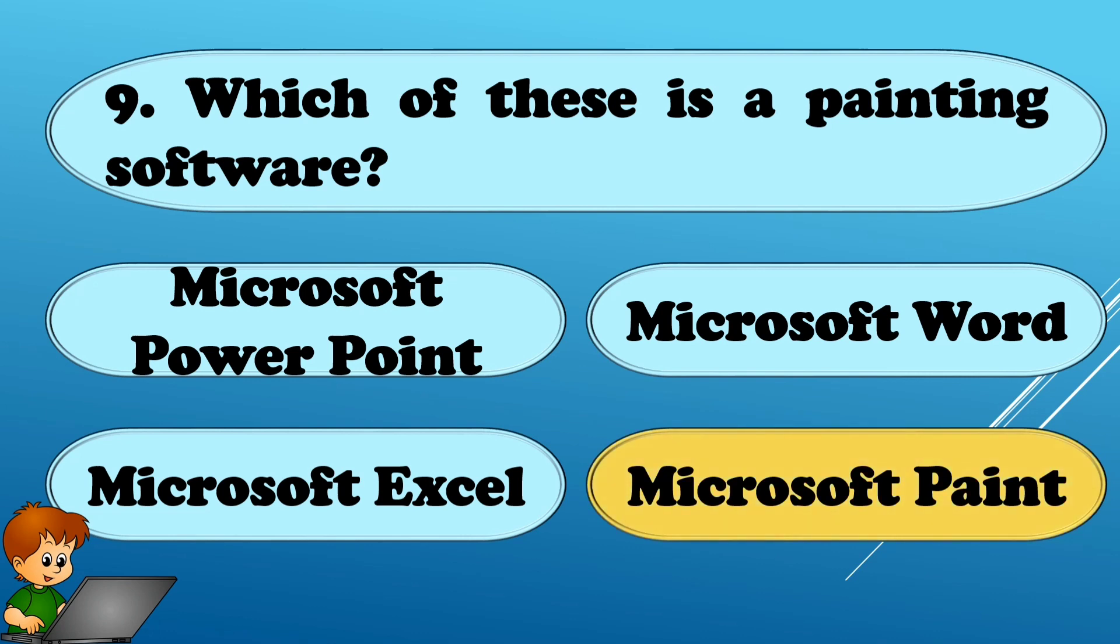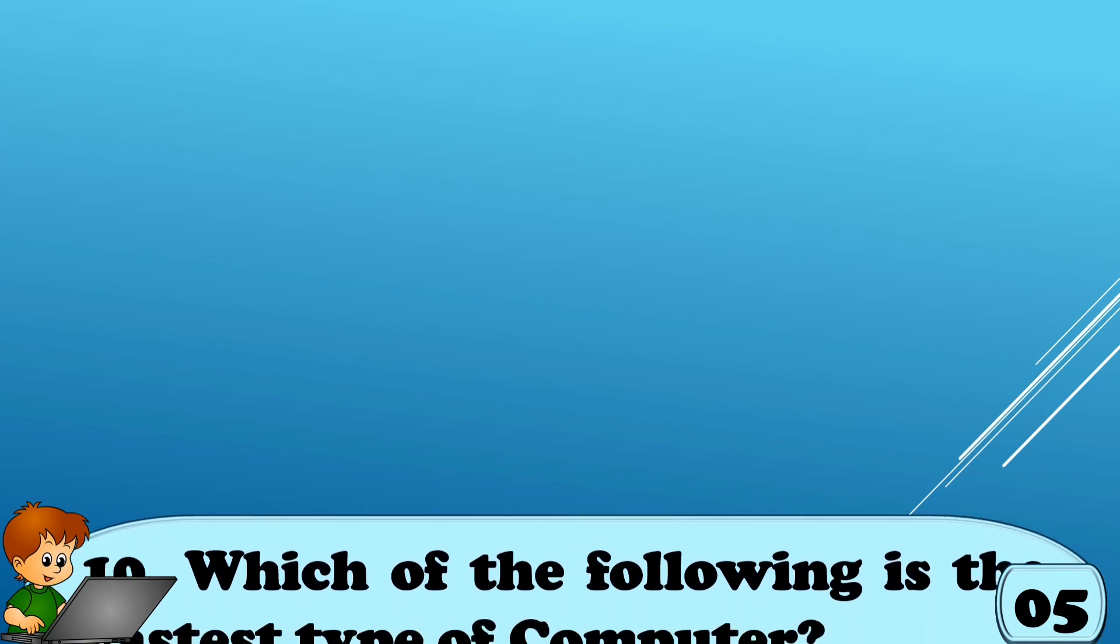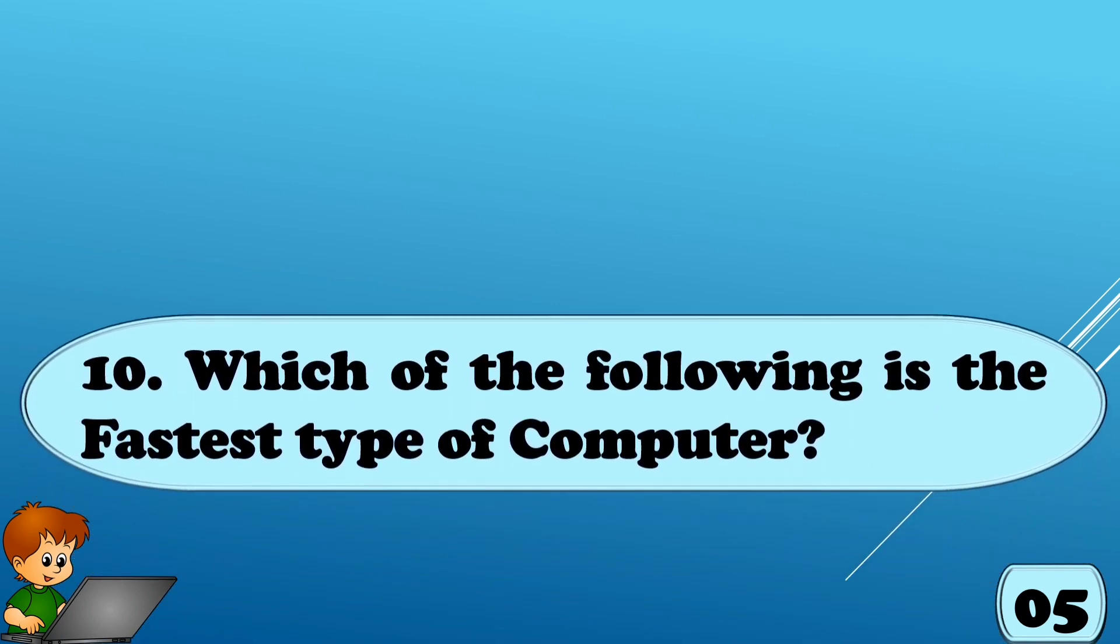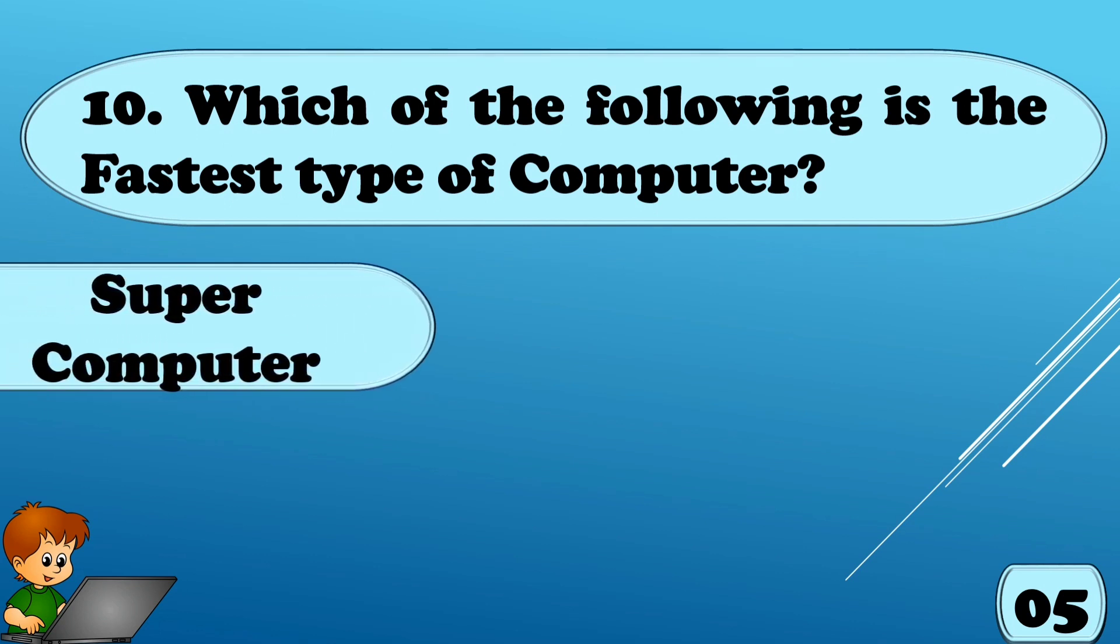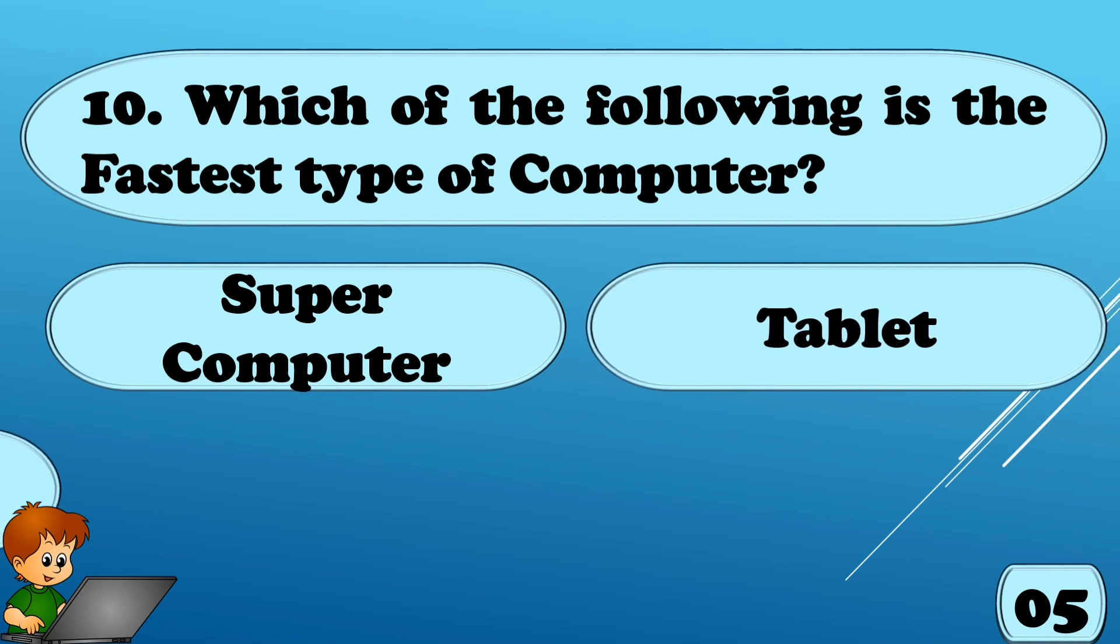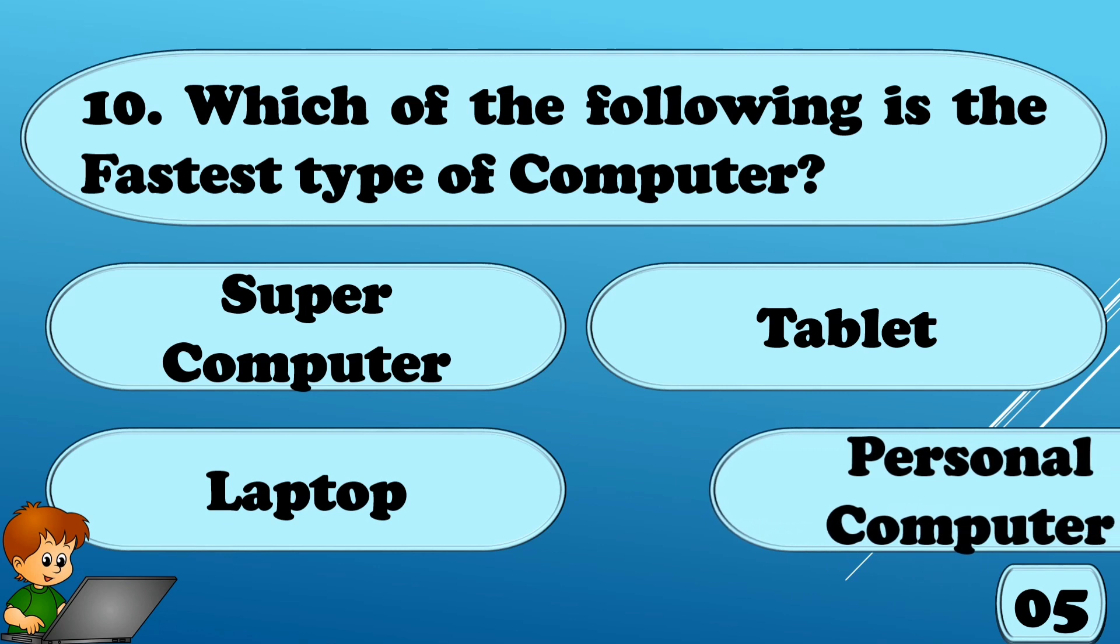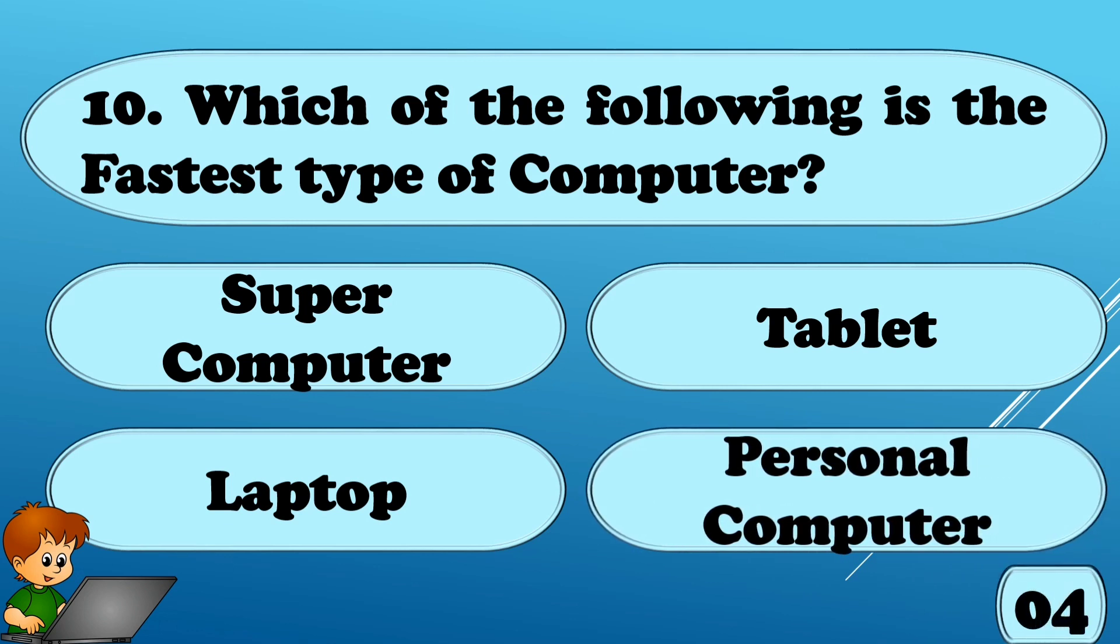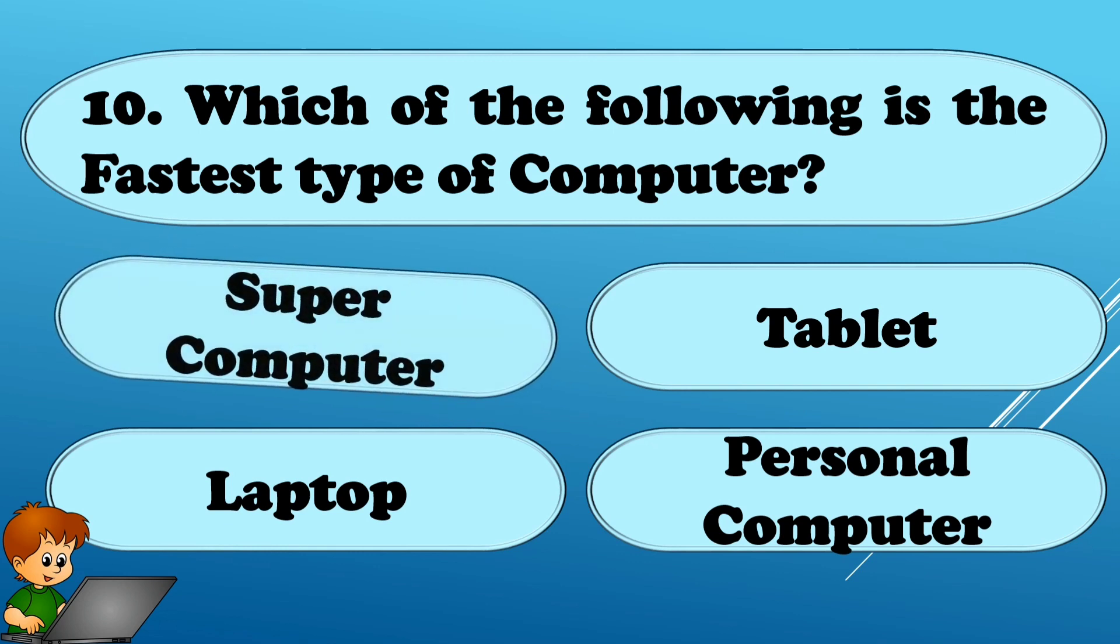Which of the following is the fastest type of computer? Options are A. Supercomputer, Option B. Tablet, Option C. Laptop, or Option D. Personal Computer. The answer is Supercomputer.